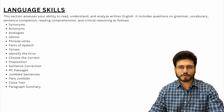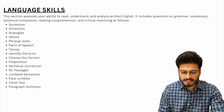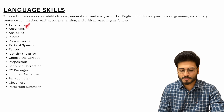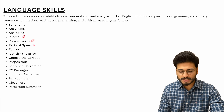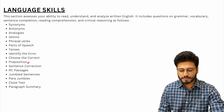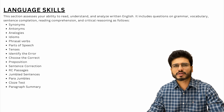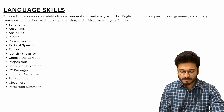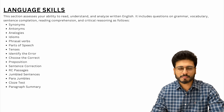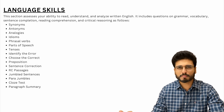Now if we talk about important topics, in Language Skills the vocabulary section includes synonyms, antonyms, analogies, idioms, phrasal verbs, parts of speech, tenses, identify the error, choose the correct preposition, and sentence correction. RC passages are very normal — there will not be much difficulty. Even if you don't have that accuracy in CAT, you will be able to crack it. Once you read it, you can comprehend it.